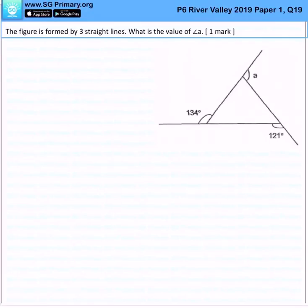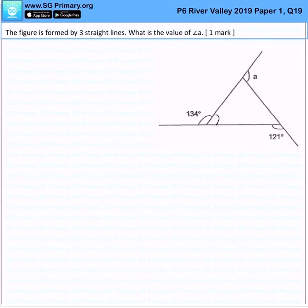The figure below is formed by three straight lines. What is the value of a? Let me walk you through. First, I want to find this unknown angle, then this angle, then this angle, and after which I can simply take 180 subtract by this unknown angle to get my a.